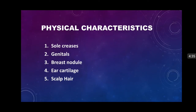The main absolute findings on the basis of which we can classify a newborn as term or preterm are five basic physical characteristics. We will discuss them ascending from foot to head: sole creases, then external genitalia, then breast nodule, ear cartilage, and finally scalp hair. These five characteristics are the basis for differentiating term from preterm, and we will now discuss them one by one.